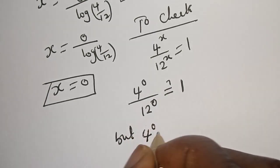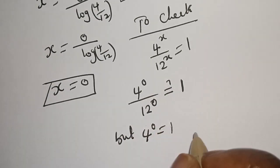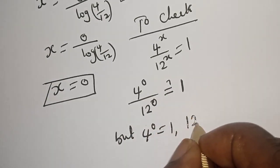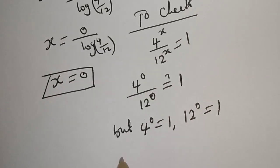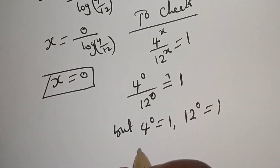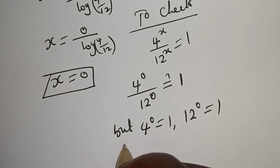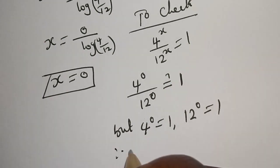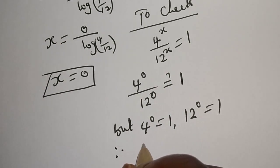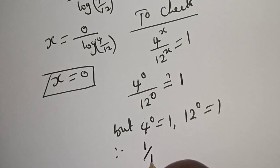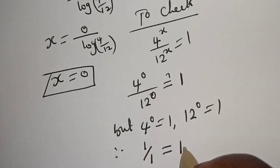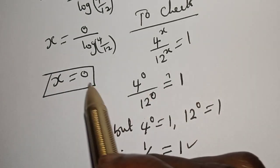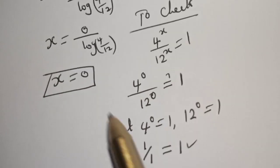4 raised to power 0 is equal to 1. Also, 12 raised to power 0 is equal to 1, from the law of indices. Therefore, 1 over 1 is equal to 1, which satisfies the equation given at s is equal to 0.